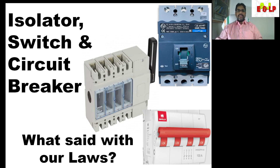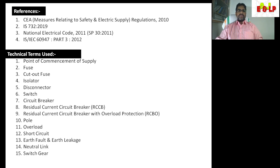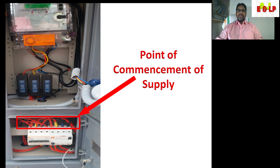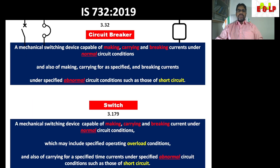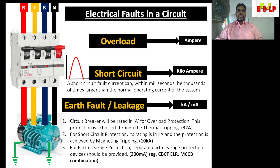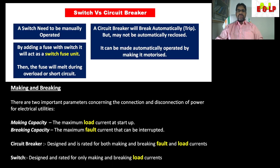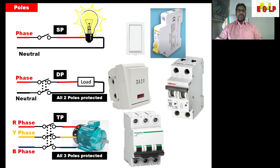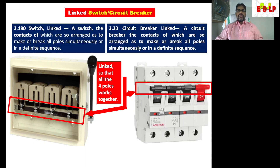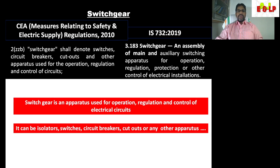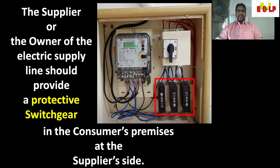Isolator, Switch and Circuit Breaker. In the first video, I explained about Isolator or Disconnector, Switch, Circuit Breaker, the difference between Switch and Circuit Breaker, different types of electrical faults, number of poles, TPN, SPN, Linked Switch and Circuit Breaker, and different notations. Kindly go through them.